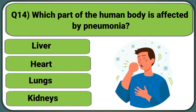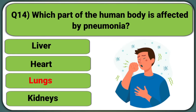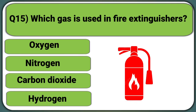Which part of the human body is affected by pneumonia? Liver, Heart, Lungs, or Kidneys. Answer: Lungs.